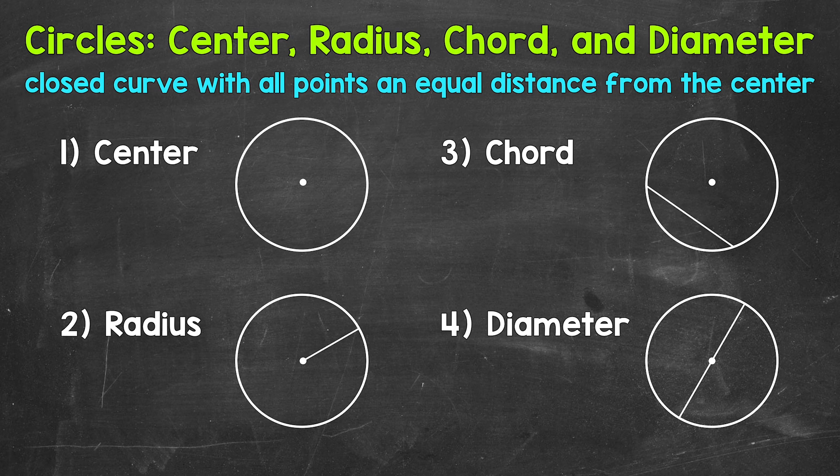Now remember, a circle is a closed curve with all points an equal distance from the center. And circles are plane figures, meaning they're two-dimensional or flat.